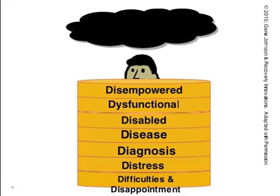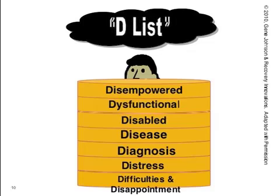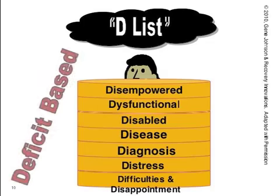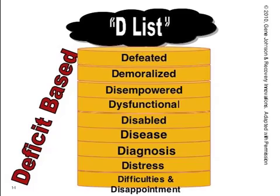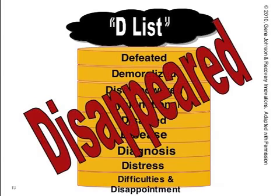People begin to take on the identity of a diseased, disabled, and dysfunctional person and lose our power and control, becoming helpless in our lives, while experts and professionals tell us what we must do and must not do. Over time, we can become overwhelmed, hopeless, and demoralized, and the cloud gets darker and darker. We become totally defeated, with little sense of the value of our life. In short, the person that we are disappears.